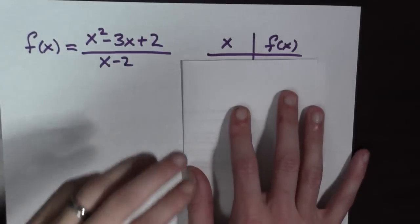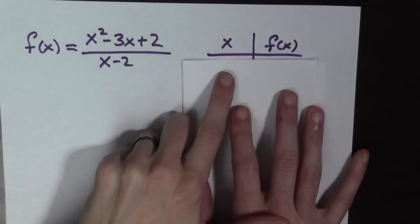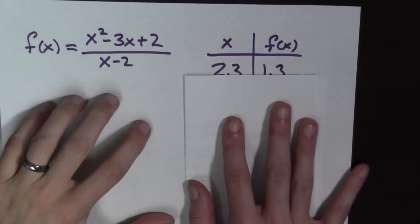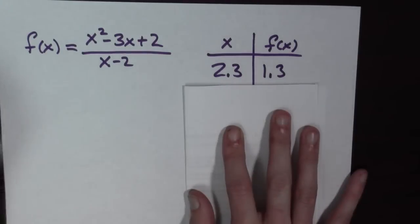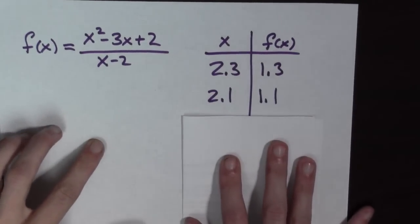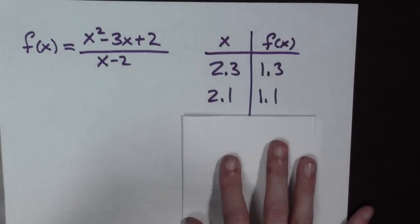So, now let's plug in values for x that get closer and closer to 2 coming from above. We'll plug in 2.3 first. So, we plug in 2.3, f of x equals about 1.3. We plug in 2.1, f of x is around 1.1.